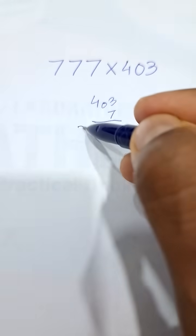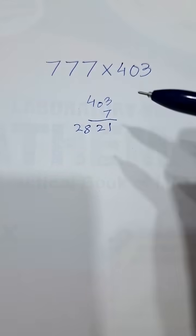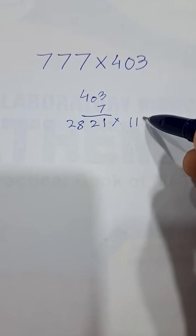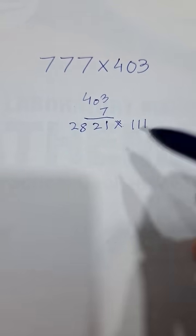7 3's are 21 and 7 4's are 28. All we need to do is to multiply this by triple 1 now. How do you multiply by triple 1?